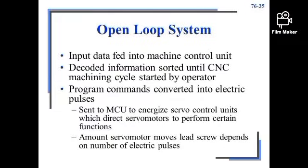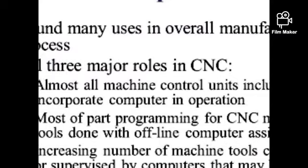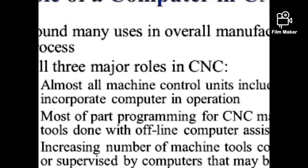Open loop system: input data is fed into the machine control unit. Information is decoded and stored in the CNC. The machining cycle is started by the operator. Program commands are converted into electrical pulses, sent from the MCU to the servo control unit, which directs the servo motor to perform certain functions. The amount the servo motor moves depends on the number of electrical pulses.